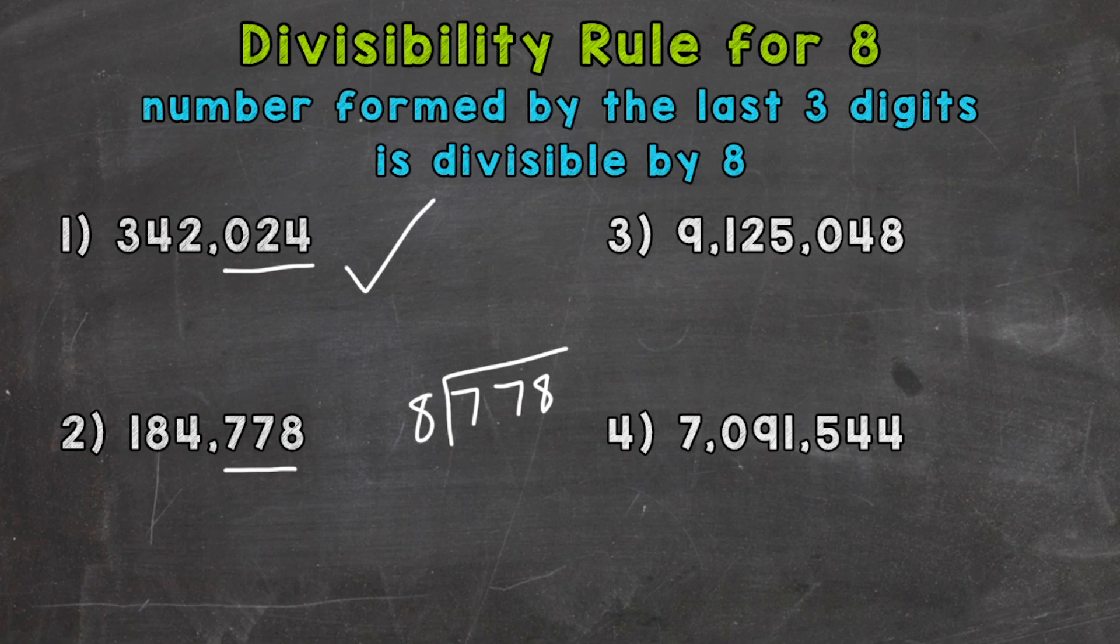We can't do it out of the 7, so we need to go to the 77. 77 divided by 8, that is going to give us 9 whole 8s. It gets us to 72. Subtract, we get 5. Bring down this 8.